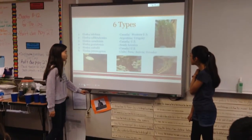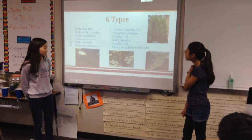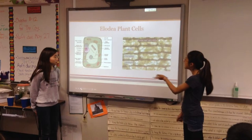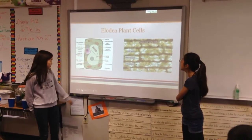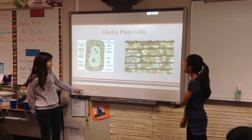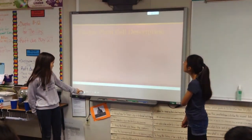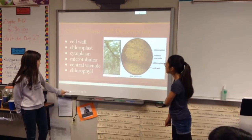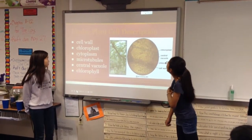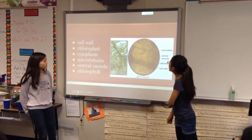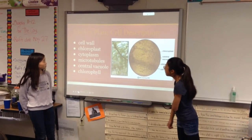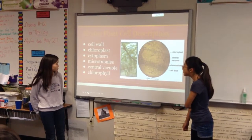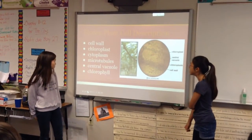These are four out of the six types shown. This is a picture of the Elodia plant cell. The Elodia plant cell contains a cell wall, chloroplasts, cytoplasm, microtubules, central vacuole, and chlorophyll.